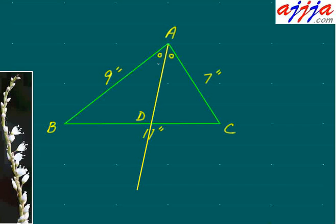Let's look at this nice triangle ABC. Then looks like angle bisector right there. So this angle, this angle is the same.